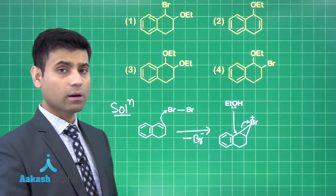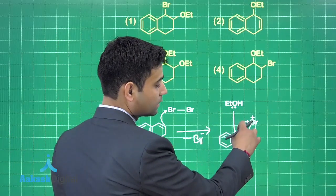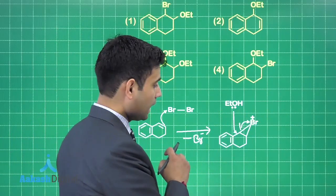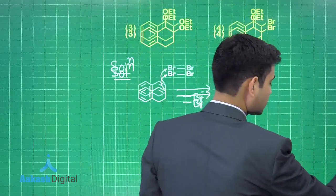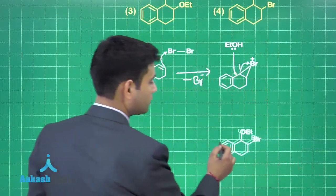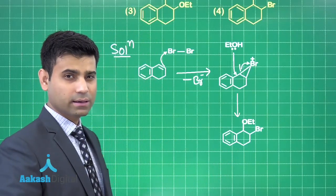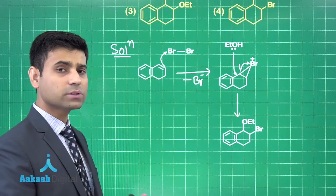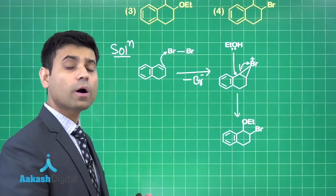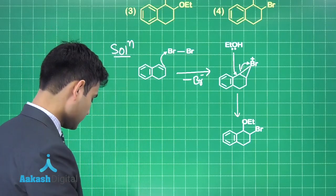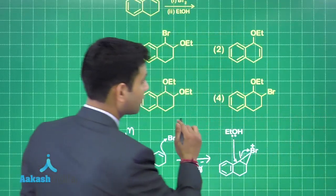Now we have ethanol. Ethanol will attack here. Because of this attack this bond will break and the product formed will be this. So addition of EtOBr takes place. The similar addition is observed in case of H2O and Br2 also. So this will be the product formed in the given reaction. Hence the correct answer for this question will be option 4.